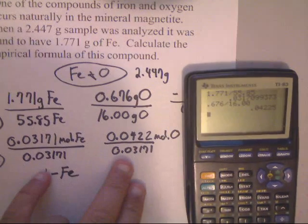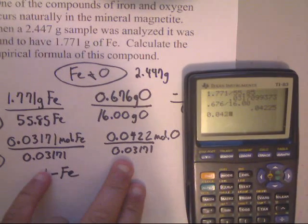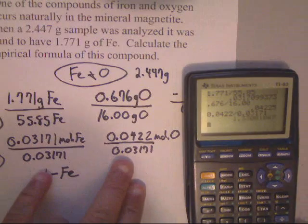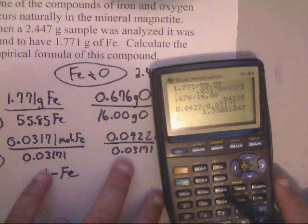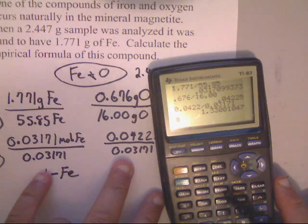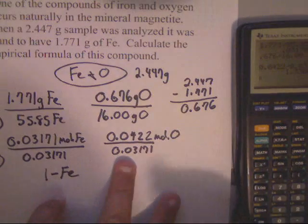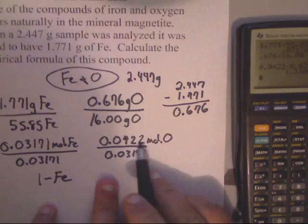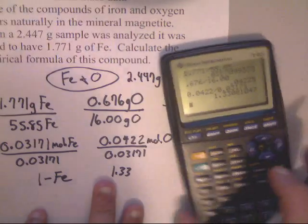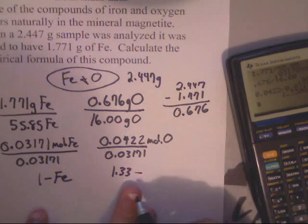Now, the problem occurs right here. Let me punch this in. We've got 0.0422 divided by 0.03171. I end up getting 1.33081047. Now, that number, we can only have three sig figs. So that gives us 1.33 oxygens.